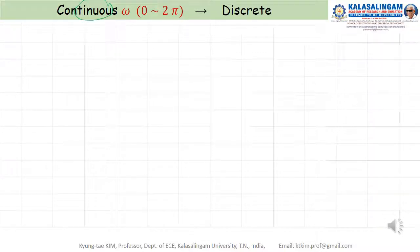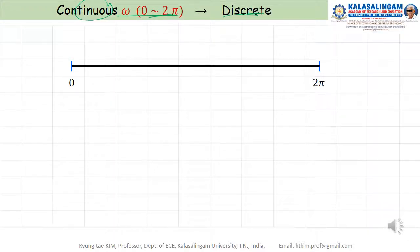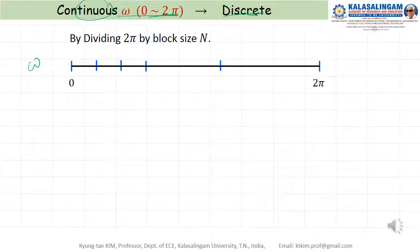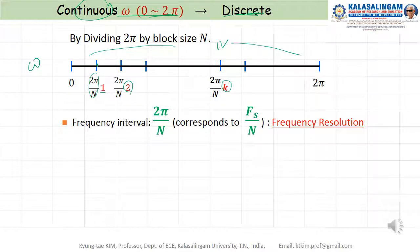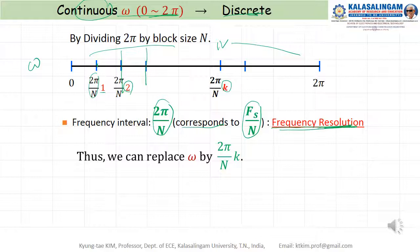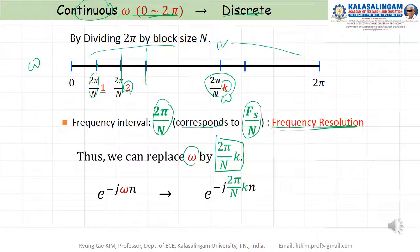Next, how to convert continuous to discrete omega. Omega goes from 0 to 2π and we divide 2π by block size N. So you get intervals of 2π over N, giving discrete values: 0, 2π/N × 1, 2π/N × 2, 2π/N × 3, up to 2π/N × k. We call this interval 2π/N the frequency interval, and this corresponds to F-s divided by N — we call this the frequency resolution. Thus, we can replace omega by 2π/N × k.